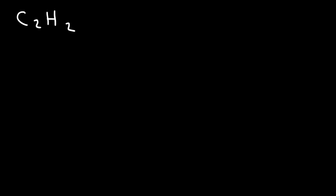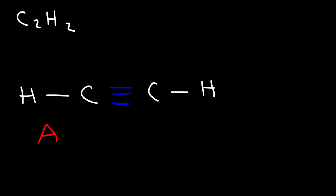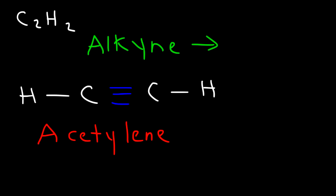Now let's move on to C₂H₂ — go ahead and try that one. Start with two carbon atoms and put one hydrogen on each. The only way for each carbon atom to have four bonds is to put a triple bond between them. This molecule is known as acetylene, and the functional group is an alkyne, which corresponds to a triple bond between two carbon atoms.